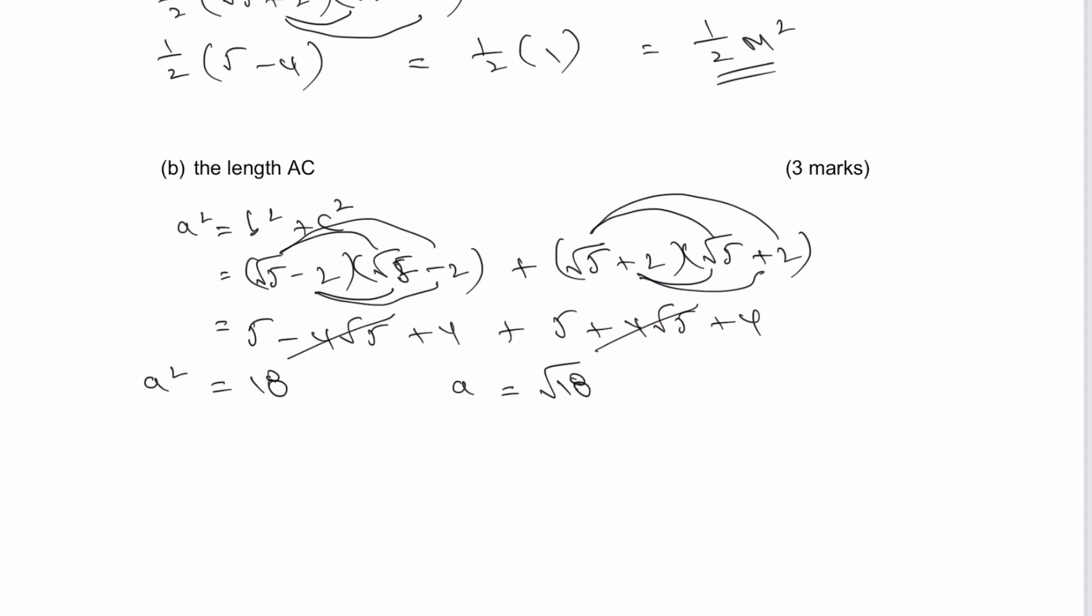Now, if it says that, you know you might have another jump to go through. And if we look at A as root 18, well, that's exactly the same as saying the square root of 9 multiplied by the square root of 2.